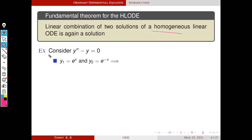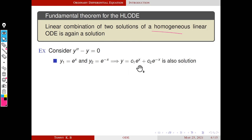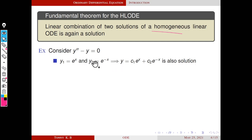In our last example, y double dash minus y equals zero is a linear homogeneous differential equation, and we know y1 and y2 are solutions. By this result, all linear combinations of y1 and y2 are also solutions — that means c1 e raised to x plus c2 e raised to minus x is also a solution for any c1 and c2. For example, 7 e raised to x minus 10 e raised to minus x — if we choose c1 as 7 and c2 as minus 10, then we have a solution.